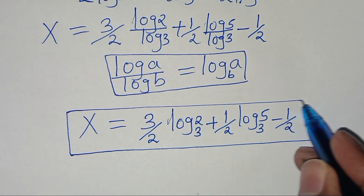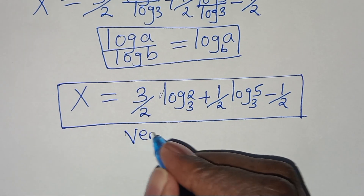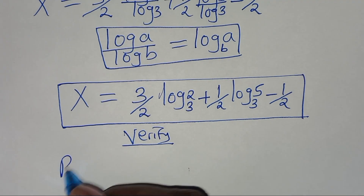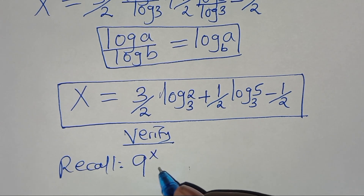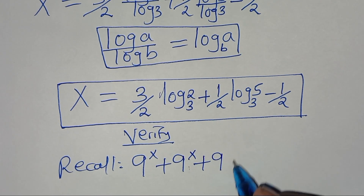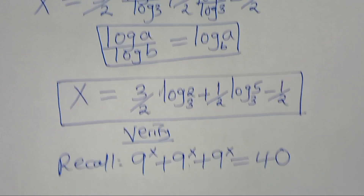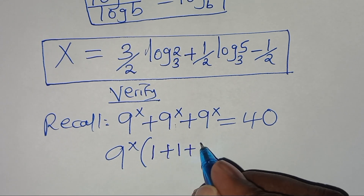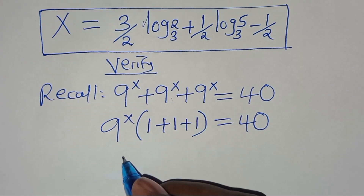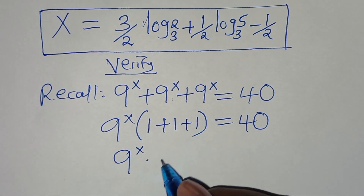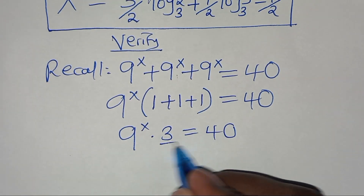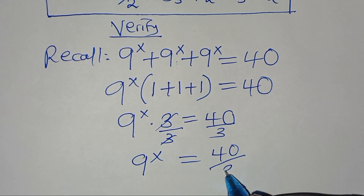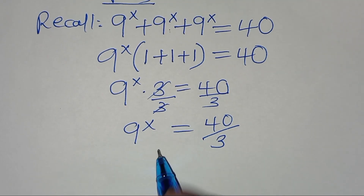Now let's verify that this value of x actually satisfies the equation. Recall that 9 to the power x plus 9 to the power x plus 9 to the power x should give us 40. Since 9 to the power x is common, we factor it out to get 9 to the power x times 3 equal to 40, so dividing by 3 gives 9 to the power x equal to 40 over 3.